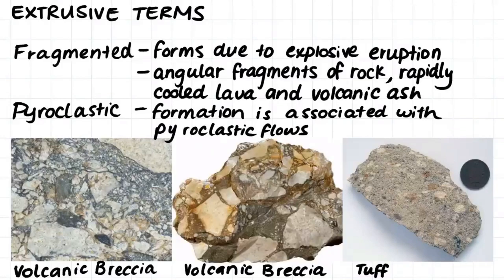Fragmented igneous rock forms when you have explosive volcanic eruptions, which usually involve a felsic magma exploding onto the earth's surface. This type of rock is called pyroclastic, as it is associated with pyroclastic flows which occur when you have explosive eruptions. Pyroclastic rock contains angular fragments of blasted rock, fragments of rapidly cooled lava, and volcanic ash. These types of igneous rocks also have very small crystals because they have cooled so quickly.